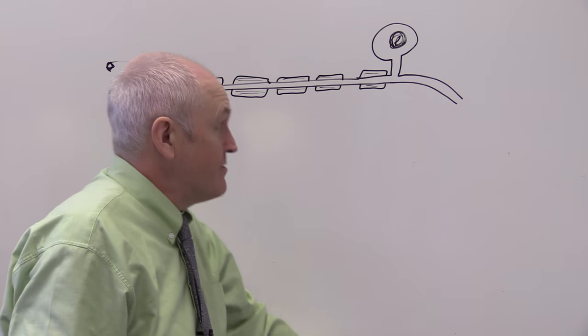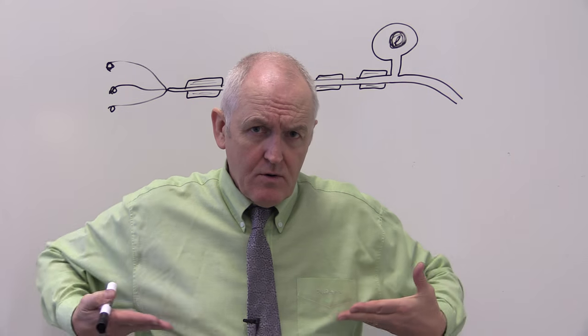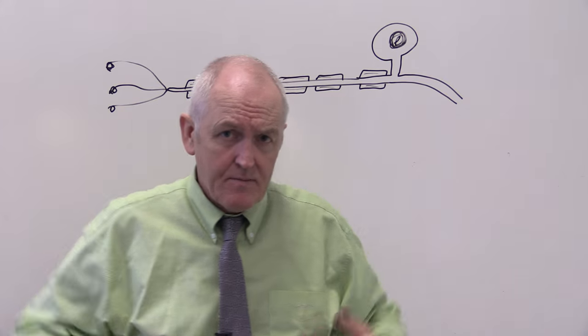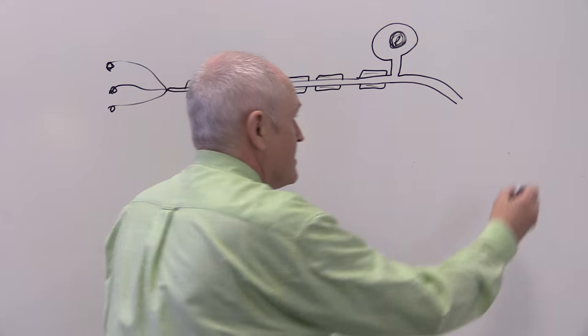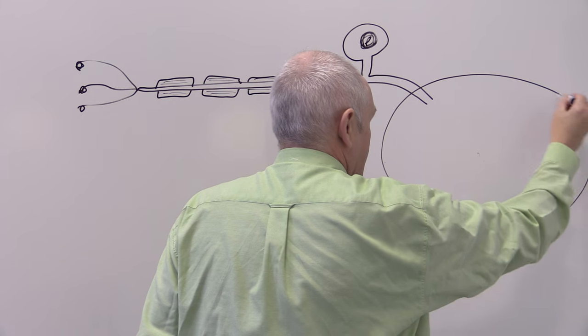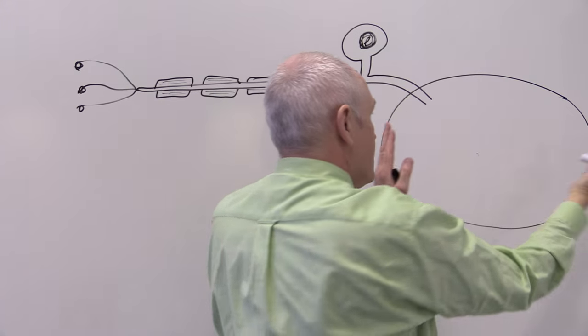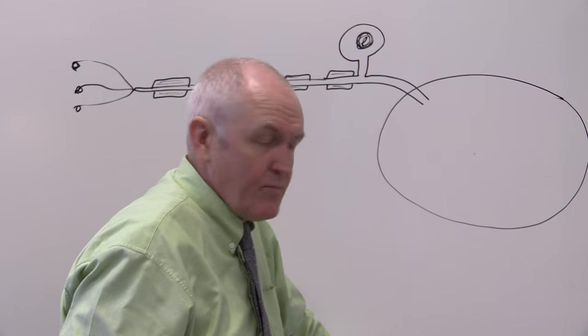And then this nerve is going to go into the spinal cord at a particular level. So here we have the spinal cord in cross section that's actually running up and down the plane of the board.